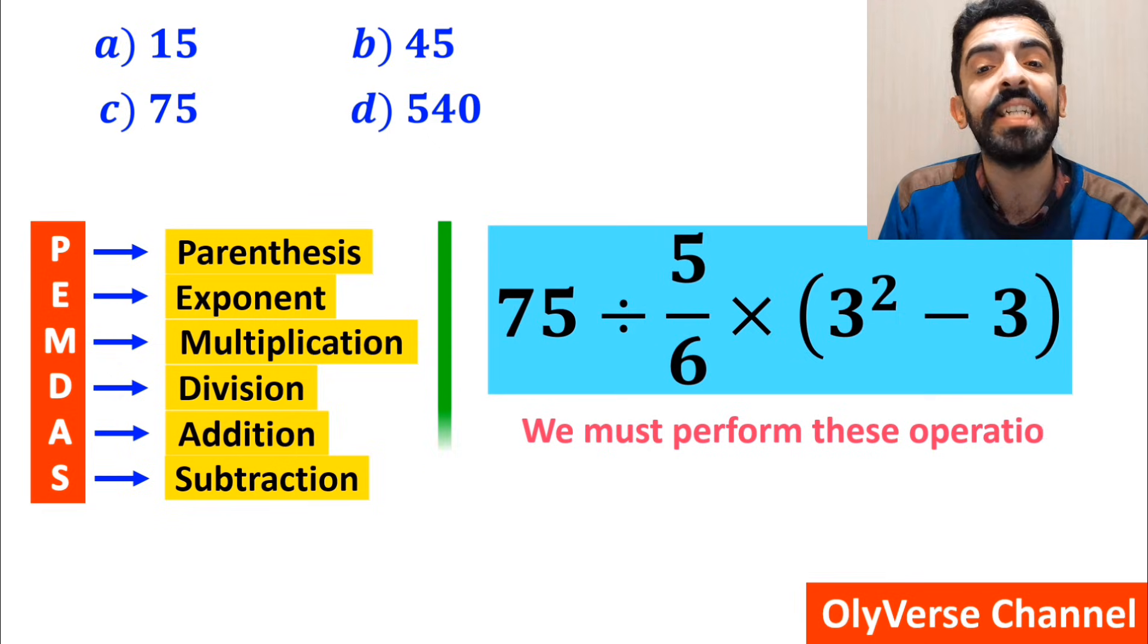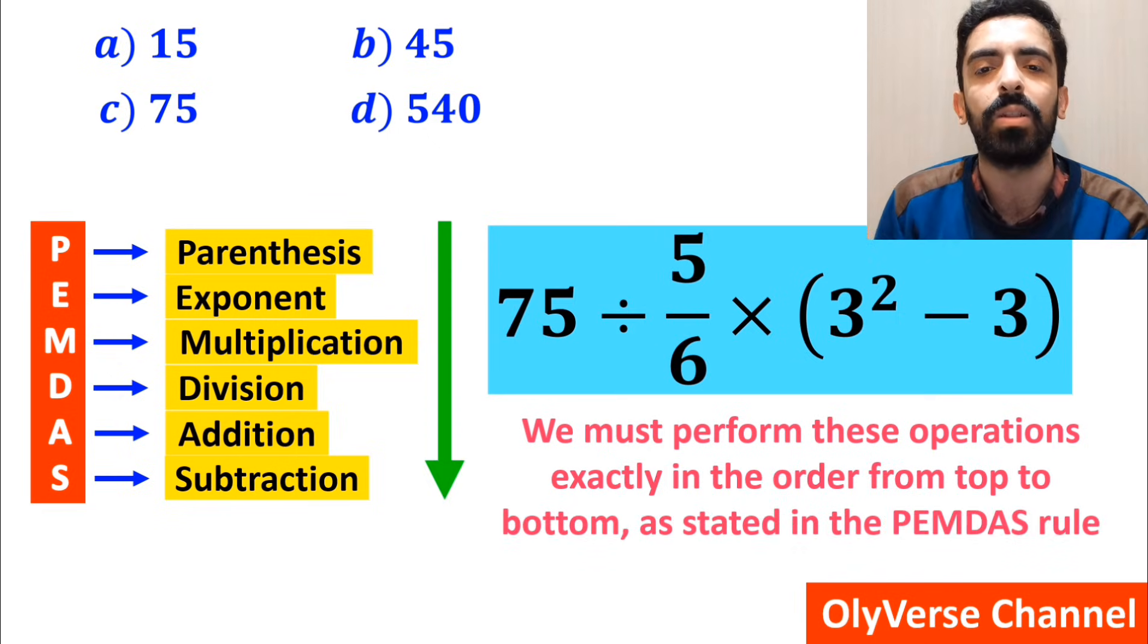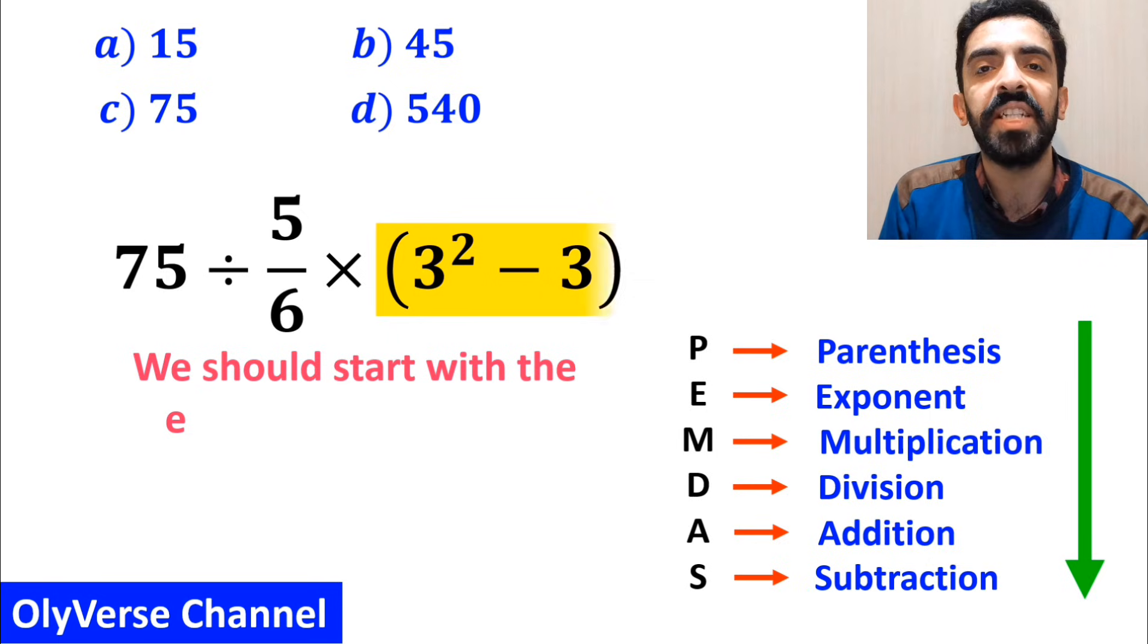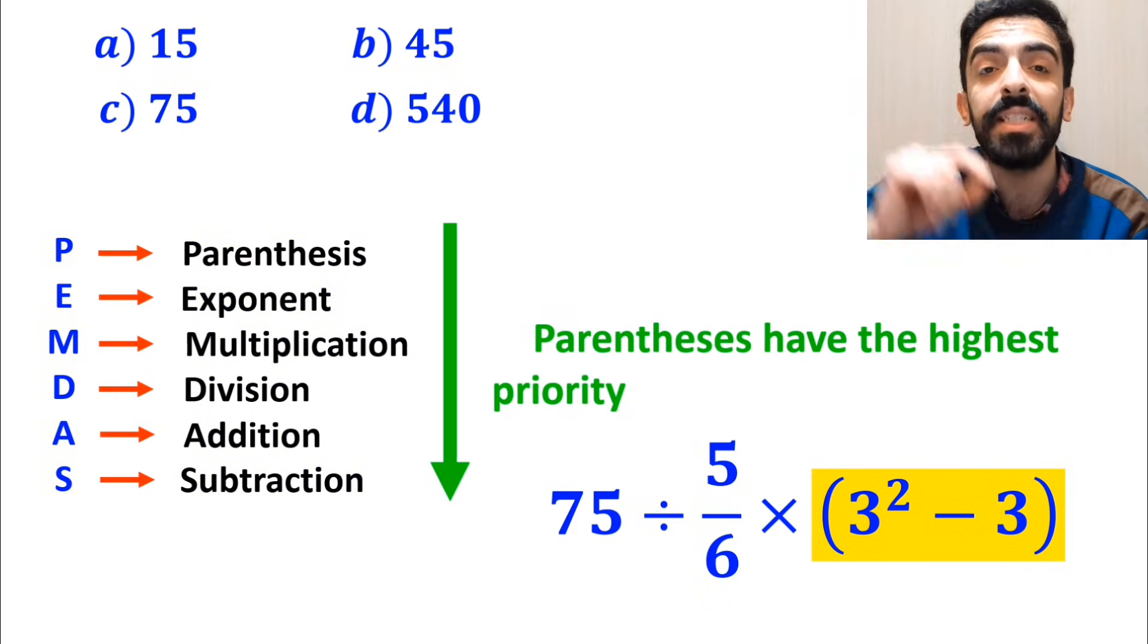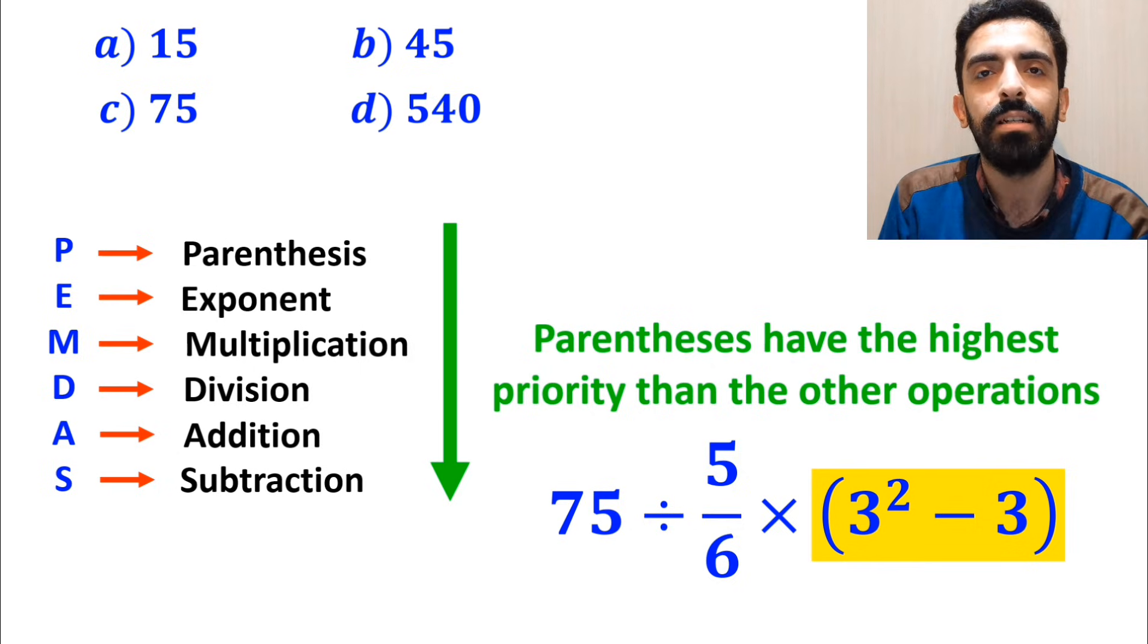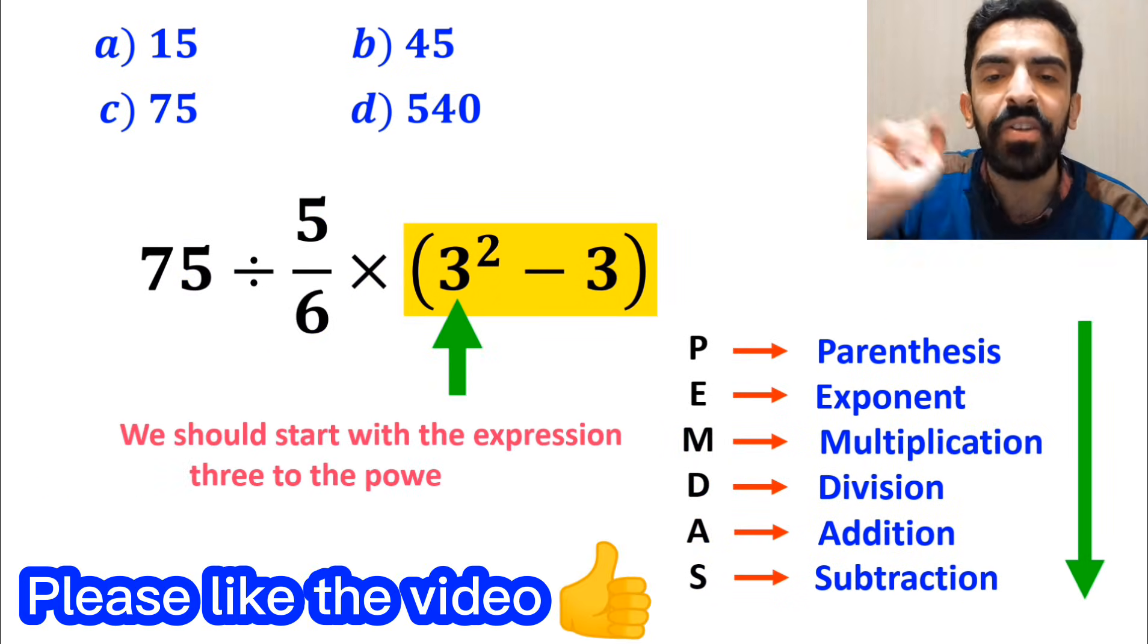We must perform these operations exactly in order from top to bottom as stated in the PEMDAS rule. So, we should solve the expression inside the parentheses first, because parentheses have the highest priority. And inside the parentheses, we should solve the expression 3 to the power of 2.